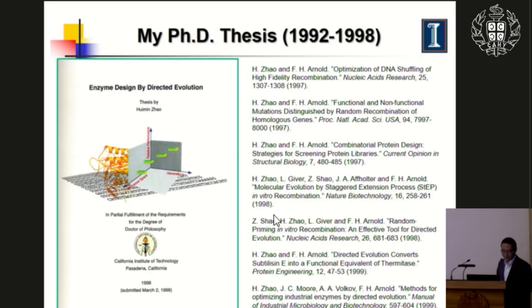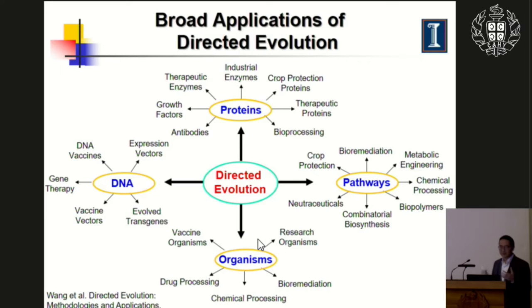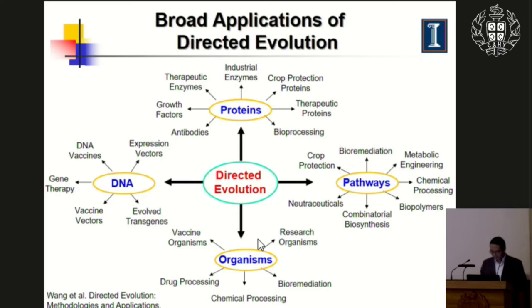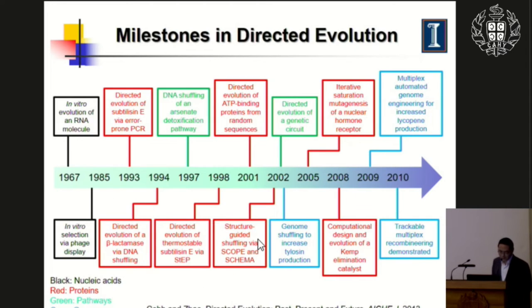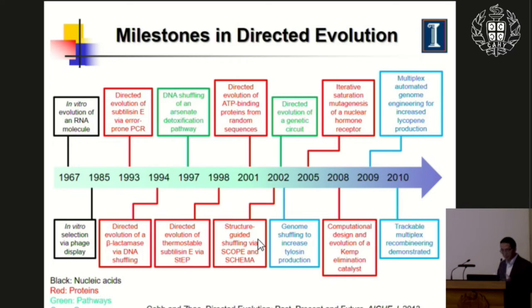Directed Evolution is not just limited to protein engineering — it can also be used to engineer DNA pathways and genomes for a wide variety of applications. It was initially mainly used for protein engineering, then later for pathway engineering, and over the past 10 years it has been increasingly used for genome engineering. In recent years, many scientists have developed so-called in vivo continuous evolution strategies, so you can continually evolve target proteins or pathways automatically without analyzing mutants in each round.